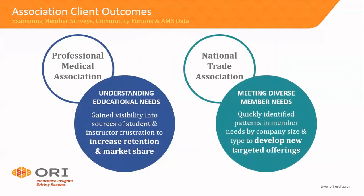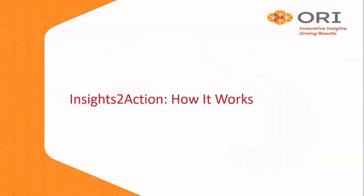For a National Trade Association, a slightly different scenario. They wanted to see into their Higher Logic community forum data in order to meet diverse member needs. We took a couple of different forum commentary sets, quickly identified patterns in member needs, and determined what small companies needed versus large companies by type of company — and were therefore able to develop new targeted offerings. Just a couple of examples of applying this offering and translating insights into action.